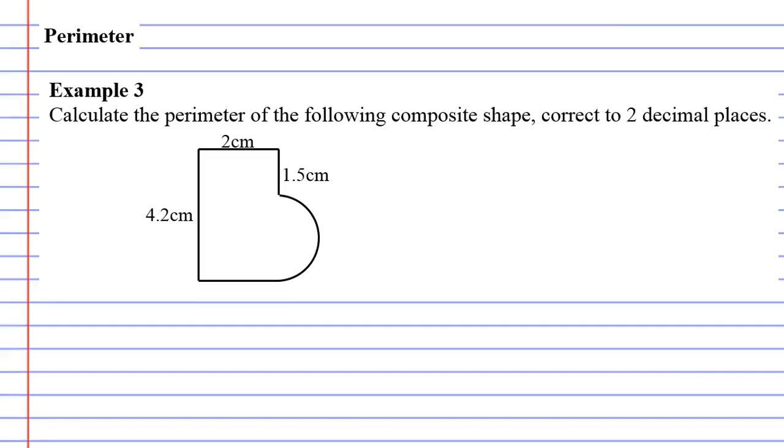We're up to a last example, our more challenging one now, and this is calculating the perimeter of what's called a composite shape. It's called composite because it's composed of more than one type of shape.